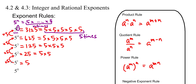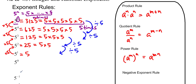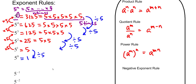We always move up by multiplying by 5. If we were moving downwards, we would be dividing by 5. From 5 to the 5 down to 5 to the 4, divide by 5. From 5 to the 4 to 5 to the 3, divide by 5. From 5 to the 3 to 5 to the 2, divide by 5. From 5 to the 2 to 5 to the 1, divide by 5. So to get to 5 to the 0, we take 5 to the 1 and divide by 5: 5 divided by 5 is 1. That's where 5 to the 0 equals 1 comes from.